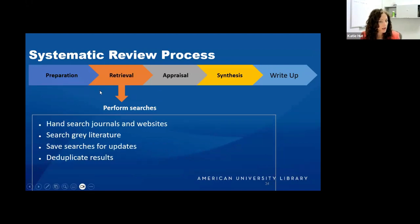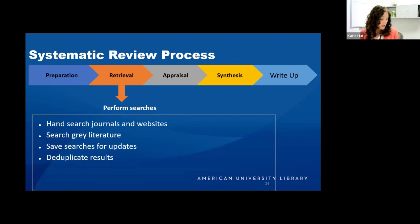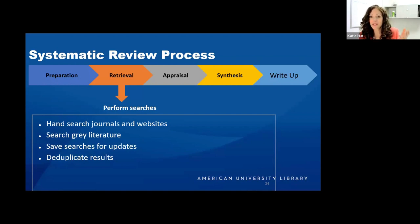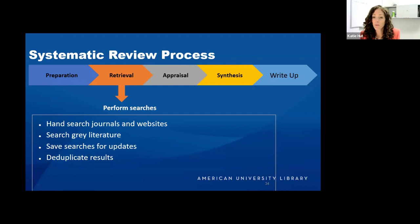After doing database searching, you're going to want to hand search. This involves manually searching the table of contents of important journals, reference lists, and bibliographies. It is important to hand search in addition to database searching since not all databases index all journals, and sometimes an index term is not correctly applied — so you may be missing things because they weren't indexed correctly.